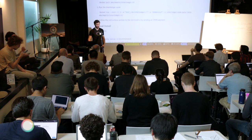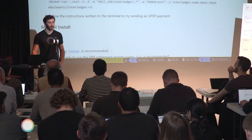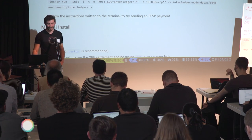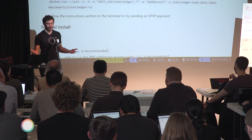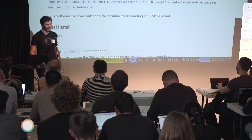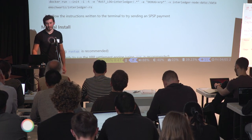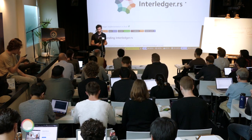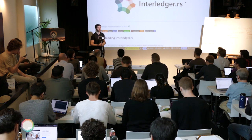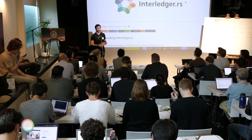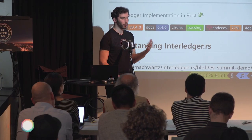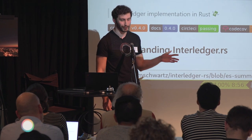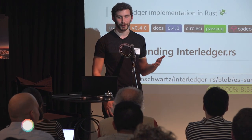Serbian domain registrars love Rust projects and Rust projects love Serbian domain registrars, because you get that perfect short domain. interledger.rs is a fully rewritten implementation of the whole Interledger protocol stack in Rust. I'm going to talk a little bit about why Rust is awesome and why you should switch to using it for everything.